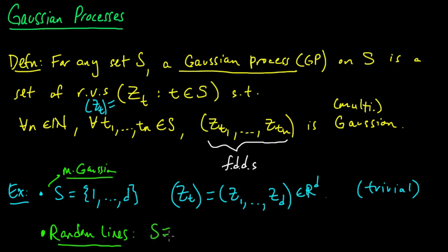For this second example we'll take S to be the real numbers, so we're going to have an uncountable collection of random variables here. Now things are starting to get interesting. We'll take Z_t to be t times W, where W is a standard normal random variable with zero mean and unit variance.